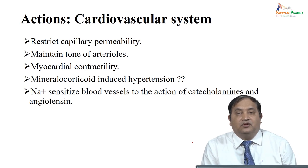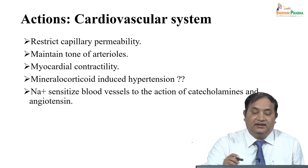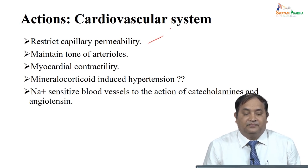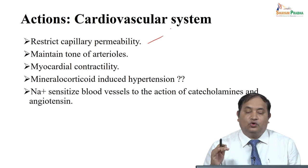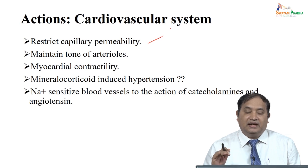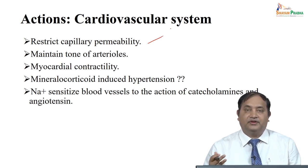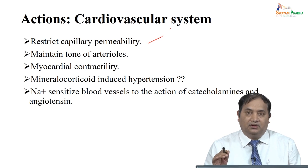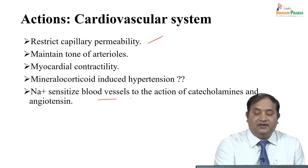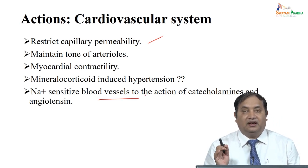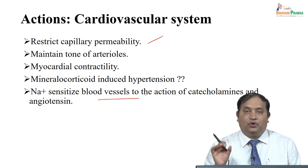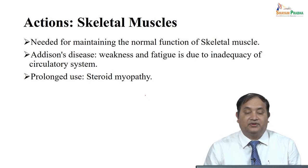Regarding the effect on the cardiovascular system: steroids restrict capillary permeability and alter the tone of arterioles. They affect myocardial contraction. Mineralocorticoid-induced hypertension occurs because more sodium is reabsorbed, leading to water retention, and the person develops hypertension. Sodium sensitizes blood vessels to catecholamines and angiotensin. Angiotensin I is converted to angiotensin II, which has a potent vasoconstrictor effect — thus developing hypertension and affecting the cardiovascular system.